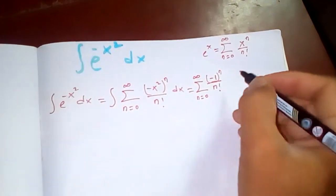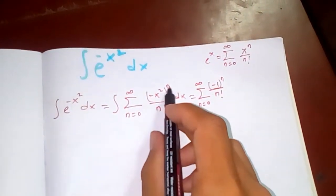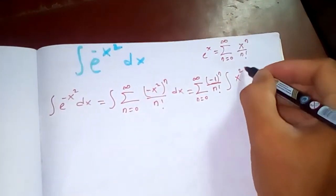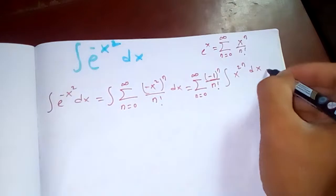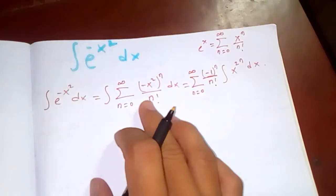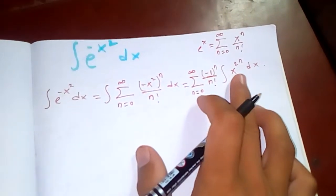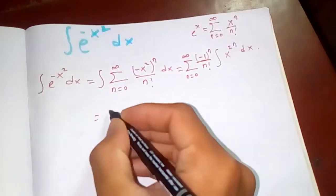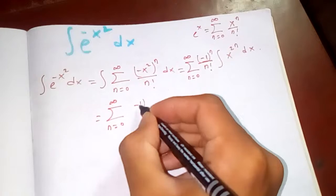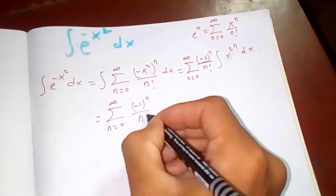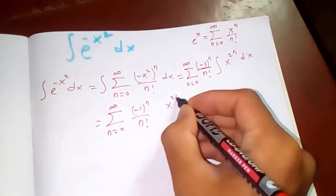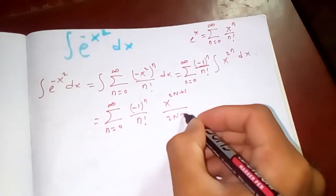We have 1 over n factorial, and we can take out negative one to the power n from inside. So our integral reduces to x to the n dx, which is easy to evaluate. This gives the summation from n equal to 0 to infinity of minus 1 to the n over n factorial, and the integration of x to the n is x to the n plus 1 over n plus 1.